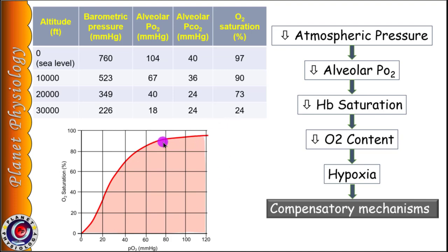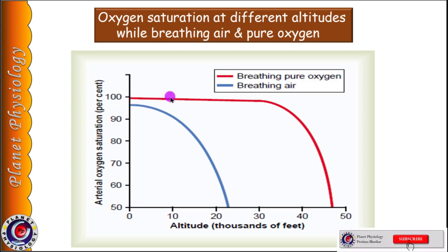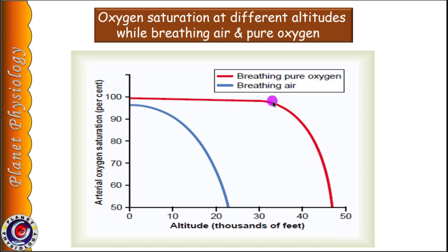In an unacclimatized person breathing atmospheric air, acute effects of hypoxia appear above 12,000 feet. But when the person is breathing pure oxygen, oxygen saturation is maintained above 90% up to 39,000 feet and then it falls rapidly.